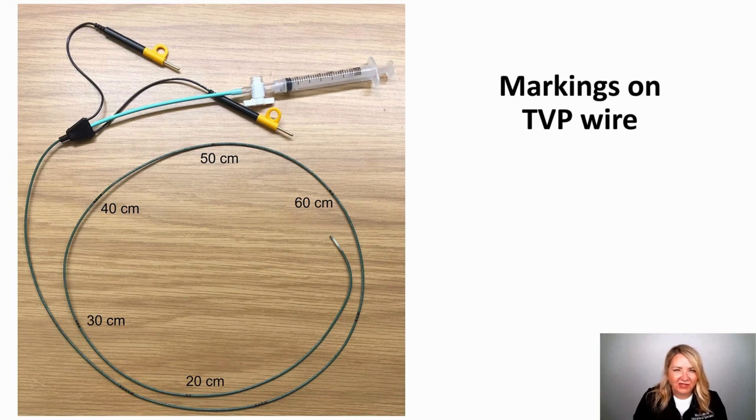For example, the exit number from a pulmonary artery catheter in a lot of adults, if it's a small adult, might be like 55 to 60 centimeters. If they're tall, it might be upwards of 65.